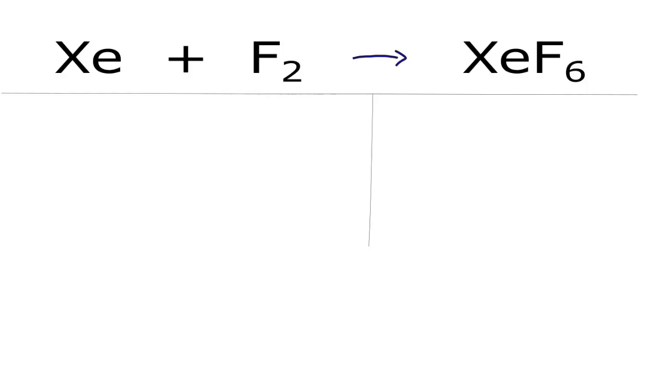Let's first count the atoms up on each side of the equation. On the reactants, Xe, we have one of those. Fluorines, we have two. On the product side, Xe, we have one. And fluorine, we have six.